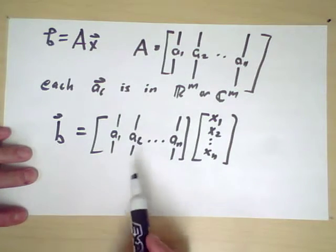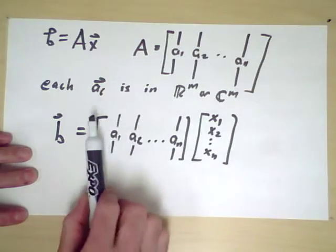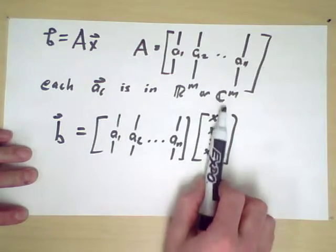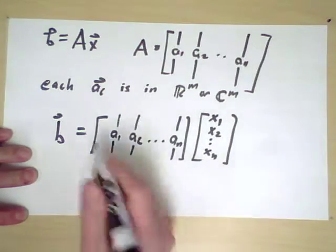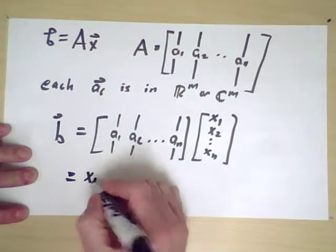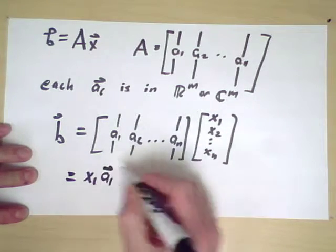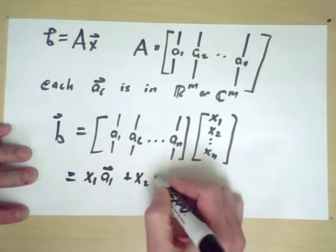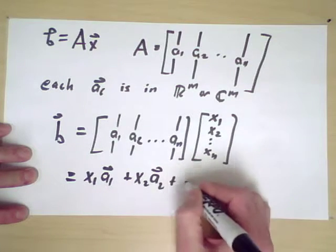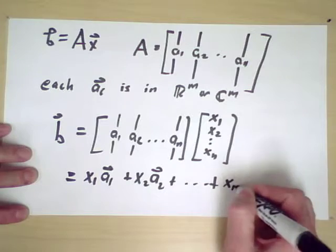And if you think about how matrix multiplication works, I'm taking each of these objects and scaling it by these numbers. So I could rewrite this in the following way. This is the number x_1 times the vector a_1, and this is the number x_2 times the vector a_2, and so on, x_n times the vector a_n.